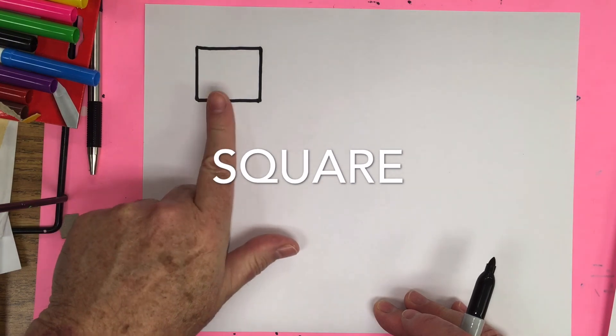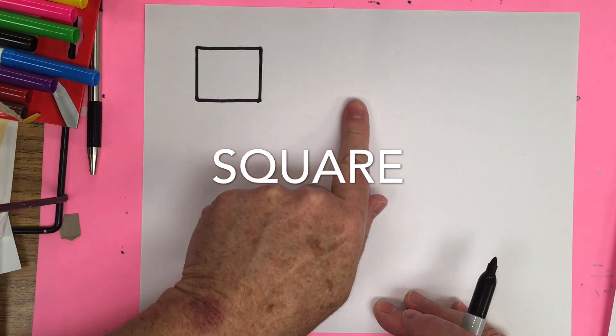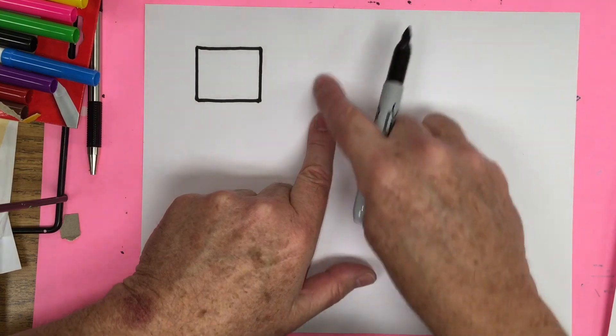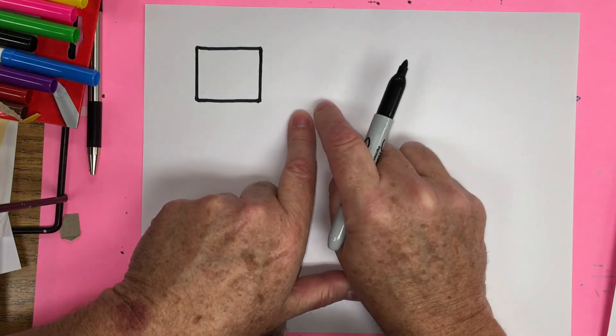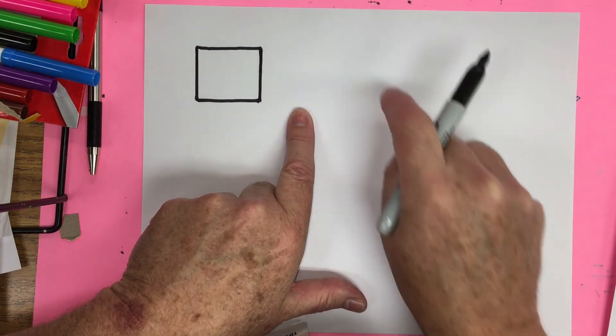You can practice making squares later. Now we're going to go on to our next shape, a triangle. And a triangle has three sides.